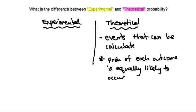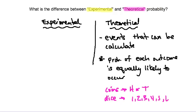Simple examples of theoretical probability include coins — heads or tails, 50/50 — and dice, where outcomes 1 through 6 are all equally likely to occur. Cards are another example: there are 52 cards and each is equally likely to be drawn. These are all things that can be calculated without running any experiment, so they fall into the category of theoretical probability.